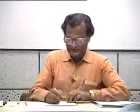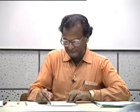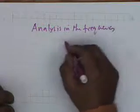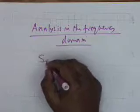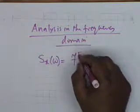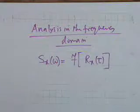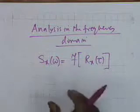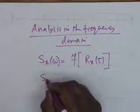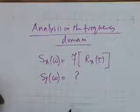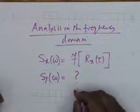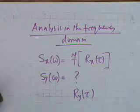We now consider analysis in the frequency domain. The quantity we have been familiar with is the spectral density S_X(ω), which is simply the Fourier transform of R_X(τ). Given S_X(ω), the spectral density of the input random process, we ask: is it possible to find S_Y(ω)? To find S_Y(ω), we need to find R_Y(τ), the autocorrelation of the output process, for which we have already derived an expression.